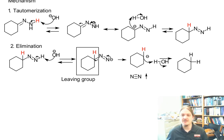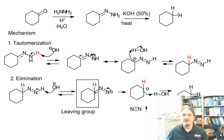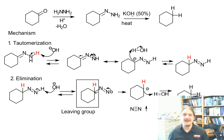To recap: any aldehyde or ketone that you can convert into the hydrazone can be reduced to the hydrocarbon by treating with concentrated hot potassium hydroxide. Thank you for watching.